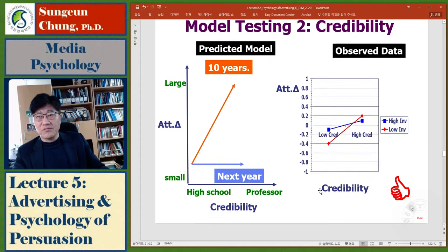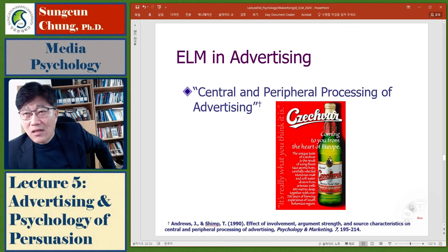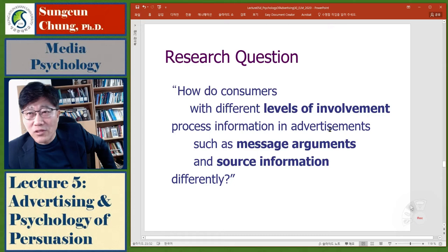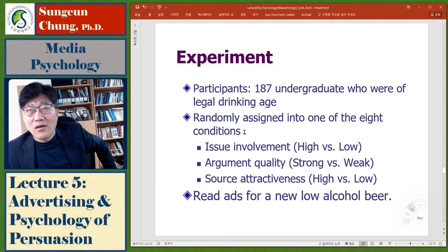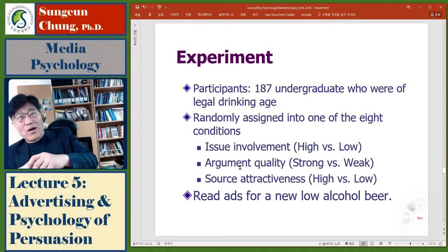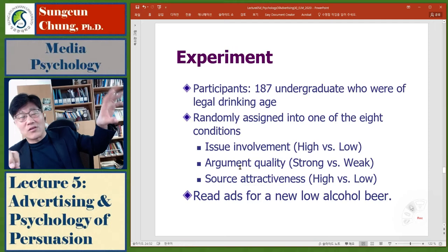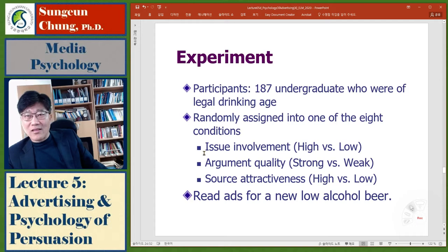I found another study that tests the Elaboration Likelihood Model using a beer advertisement, published in Psychology and Marketing: 'The Central and Peripheral Processing of Advertising.' It examines how consumers with different levels of involvement process message arguments and source credibility. They created an interesting advertisement and slightly changed it to have either high or low source attractiveness, strong or weak argument, and high or low involvement — combining these to get eight conditions. Participants read an advertisement for a new low-alcohol beer.